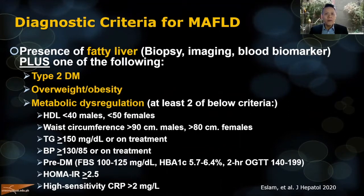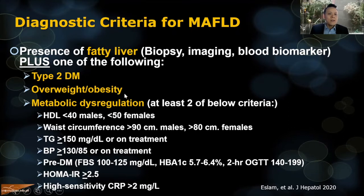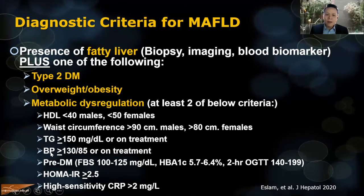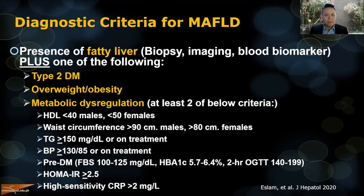For the MAFLD diagnosis, you must have fatty liver, but you also have to meet certain criteria. You need at least one of the following: diabetes, being overweight, or evidence of metabolic dysregulation. Endocrinologists will recognize these criteria, because they are used for the diagnosis of the metabolic syndrome. Once you have at least one of these, you can clinch the diagnosis of MAFLD.